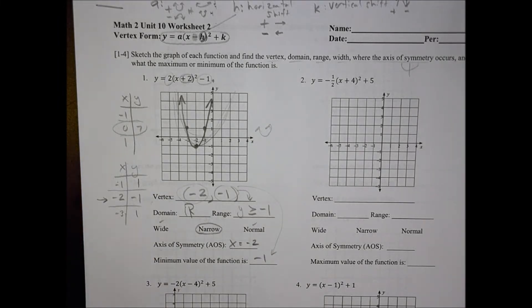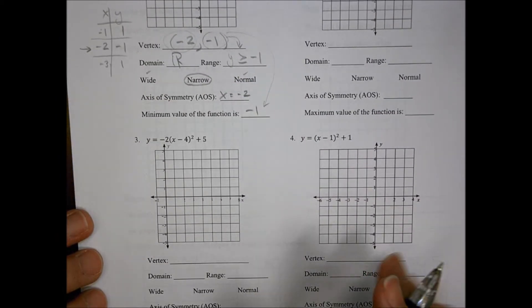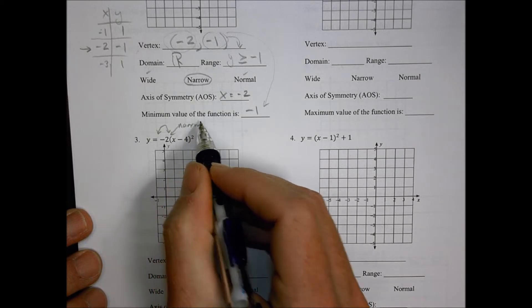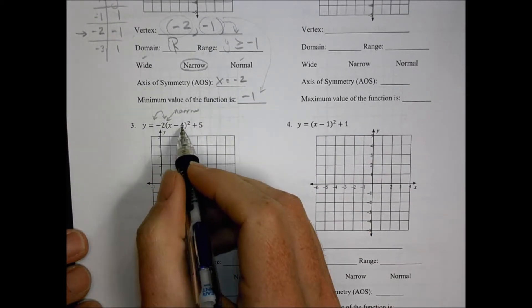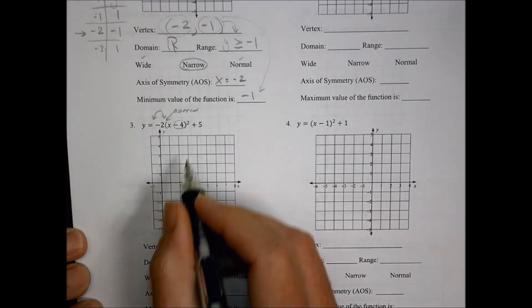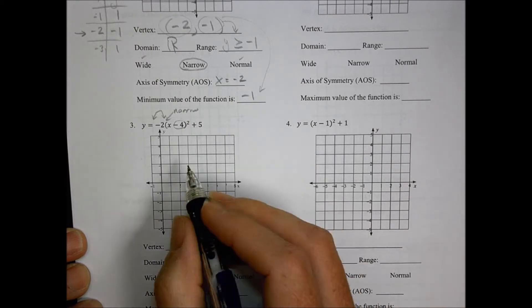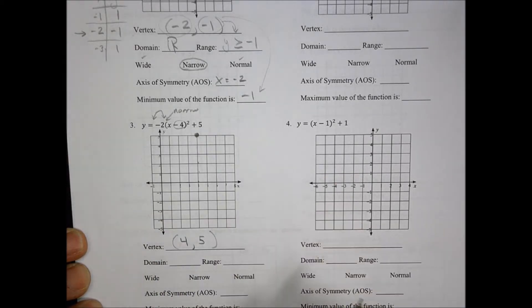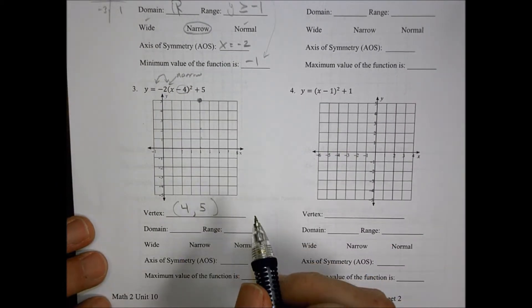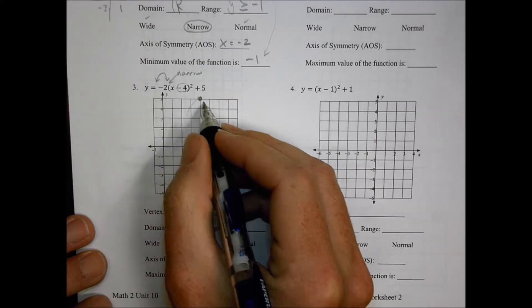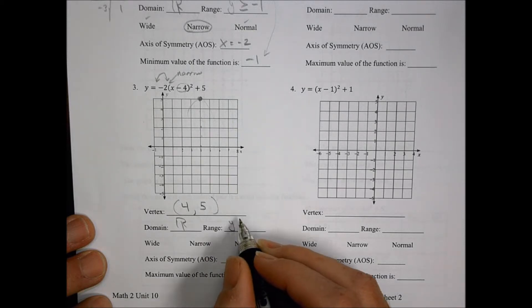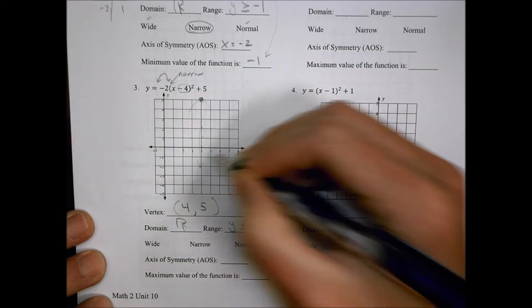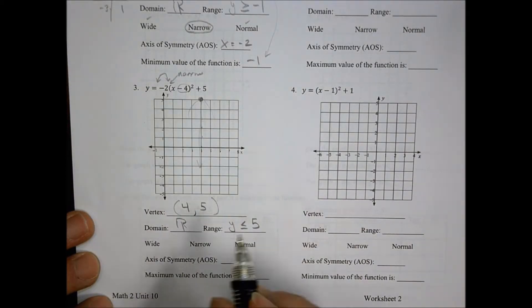Let's take a look at number three. Here we have a negative 'a' value telling me it's going to be curving down, and a two which tells me it's going to be narrow or skinny. Vertex form — take the opposite — so the x value is positive four and the y value is positive five. That's my vertex at (4, 5). The domain is all values of x. The range is going to be everything less than or equal to five, since the parabola curves downward. Because I have a whole number, this will again be narrow.